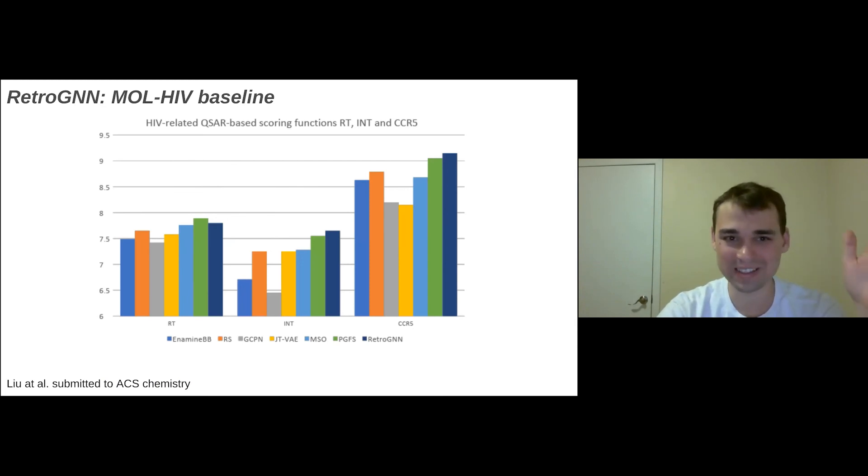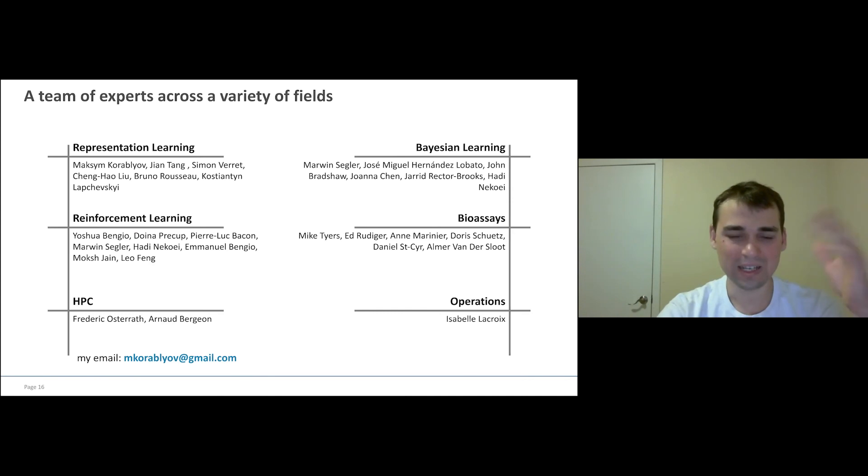And here is a bit more recent result. So we actually compared this retro GNN with a very simple Boltzmann search to some of the published papers like JTVAE and many other, even reinforcement learning baselines. And it appears if you do Boltzmann search big enough, we actually can win against most of other algorithms. And there are three baselines. I think one of them is for HIV, and another one is basically discovering a drug or a particular binder. And we just submitted this work to ACS chemistry.